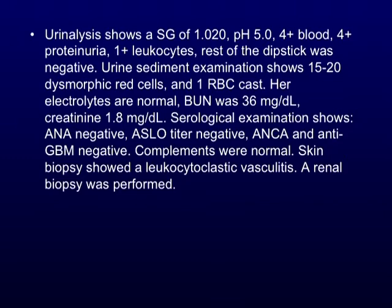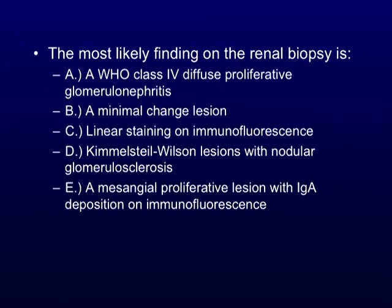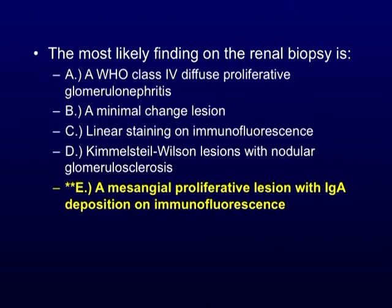Skin biopsy shows leukocytoclastic vasculitis and a renal biopsy is performed. The most likely finding on the renal biopsy is: A) WHO class 4 diffuse proliferative GN, B) minimal change lesion, C) linear staining on immunofluorescence, D) Kimmelstein-Wilson lesions with nodular glomerular sclerosis, or E) mesangio-proliferative lesion with IgA deposition on immunofluorescence. The correct answer is E.